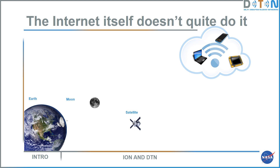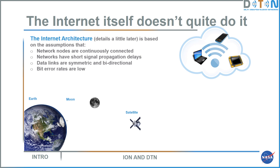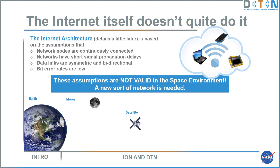The internet itself is not really up to the job of managing a network in deep space. It's based on assumptions that network nodes are continuously connected, that networks have short signal propagation delays, that data links are symmetric and bidirectional, and that bit error rates are relatively low. These assumptions are not valid in the space environment, so a new sort of network is needed.